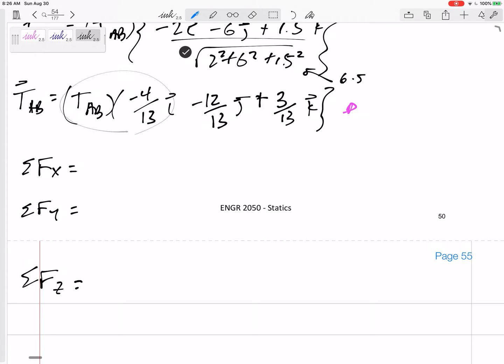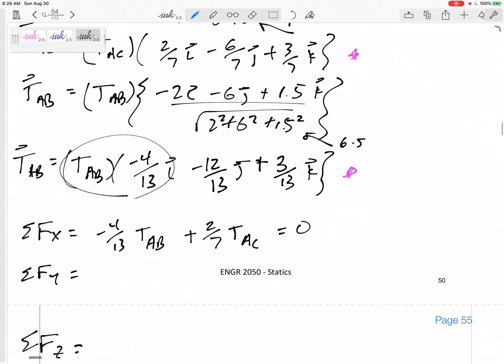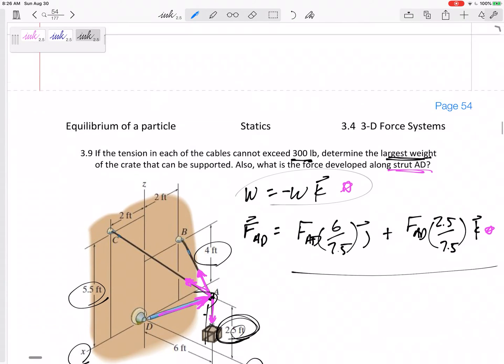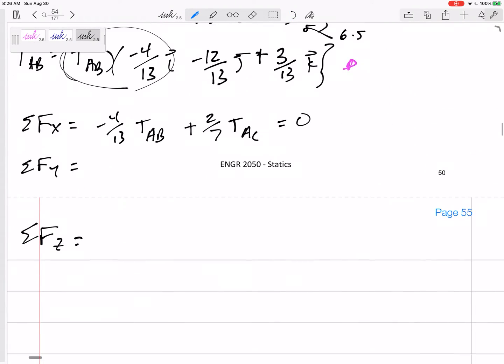So, in the X. Got that one, negative 4 thirteenths TAB. Then, the next one, 2 sevenths TAC. That's it. Right? That's it. This one doesn't have an X. This one doesn't have an X either. So, set that equal to 0.